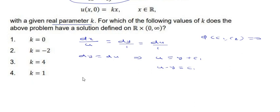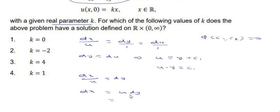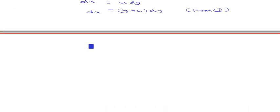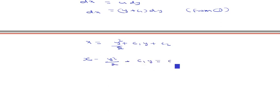For the second invariant, taking the first two ratios: dx/u = dy, so dx = u · dy. Substituting u = y + c1 from equation 1, we get dx = (y + c1) dy. Integrating both sides, x = y²/2 + c1·y + c2, so x − y²/2 − c1·y = c2.